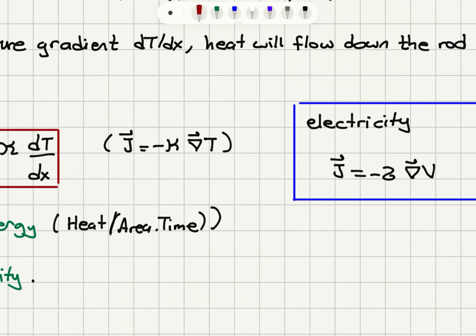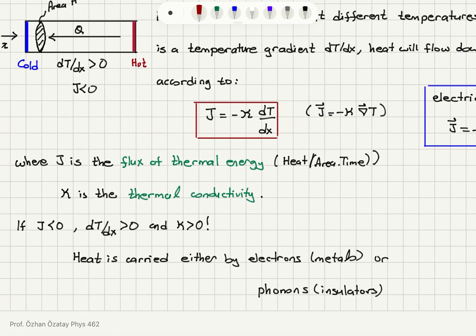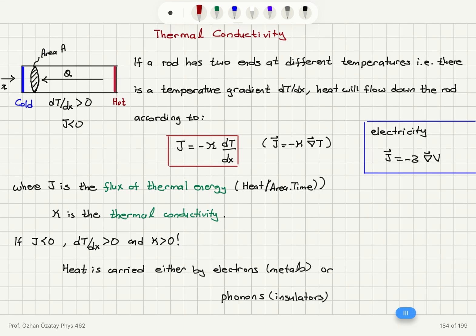Looking at Ohm's law, j equals minus sigma times the gradient of voltage: the current density is related to the voltage change using the electrical conductivity sigma. We have a similar situation here for thermal conduction. If j is negative, dT/dx is positive and kappa is positive, giving a negative heat flux. The mechanism of heat conduction is carried either by electrons in metals or phonons in insulators, and we will focus on the phonon contribution.